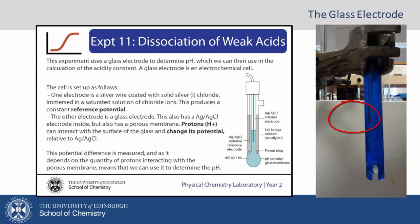The other electrode is a glass electrode. This has also got the silver silver chloride electrode inside but it has a porous membrane and protons can interact with the surface of the glass and change its potential relative to the silver silver chloride. Because its potential difference is measured and because it depends on the quantity of protons interacting with the porous membrane, this means that we can use it to determine the pH.